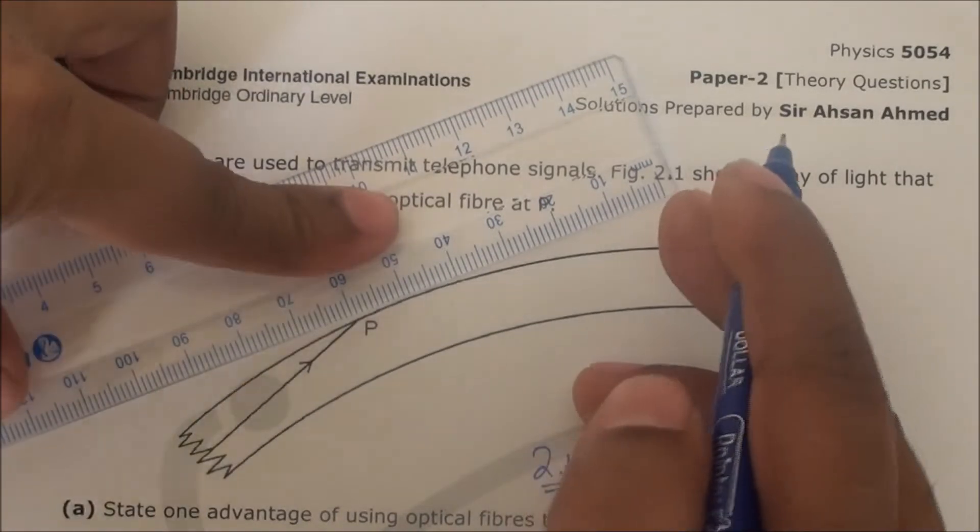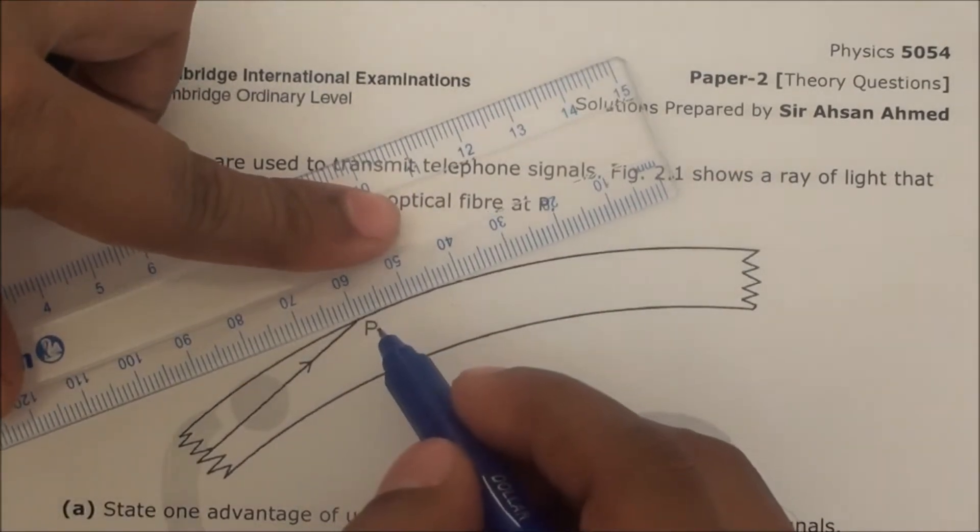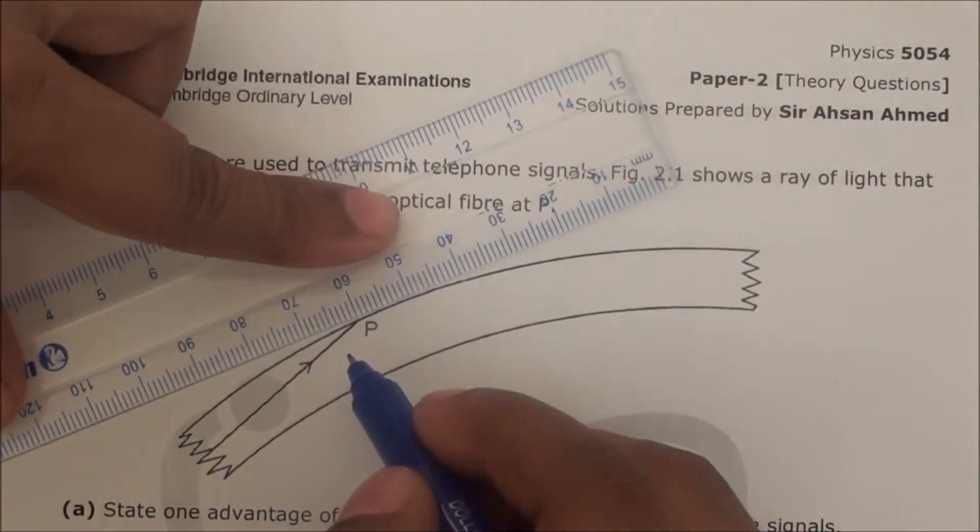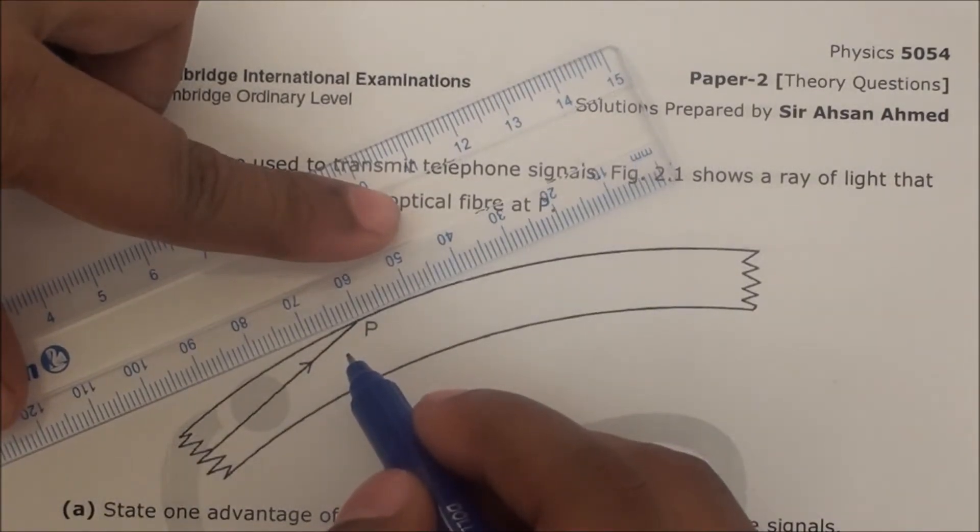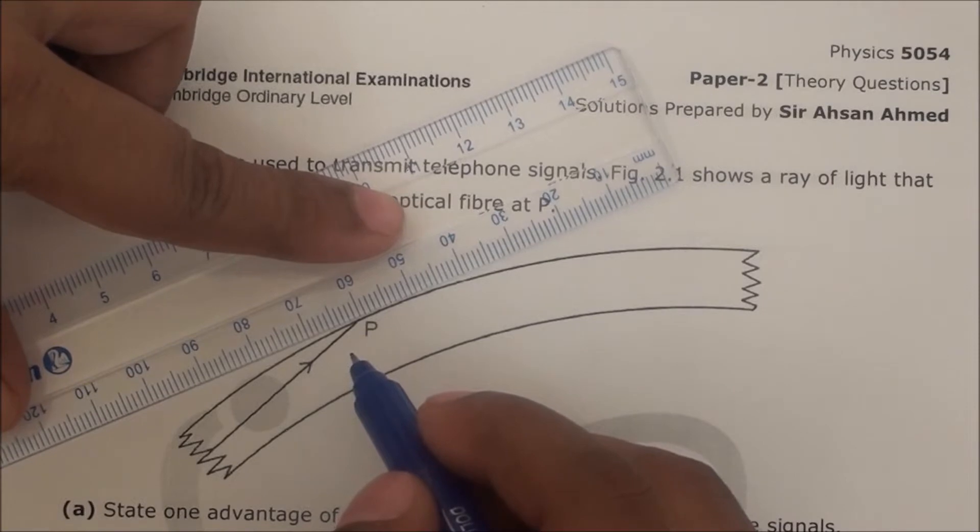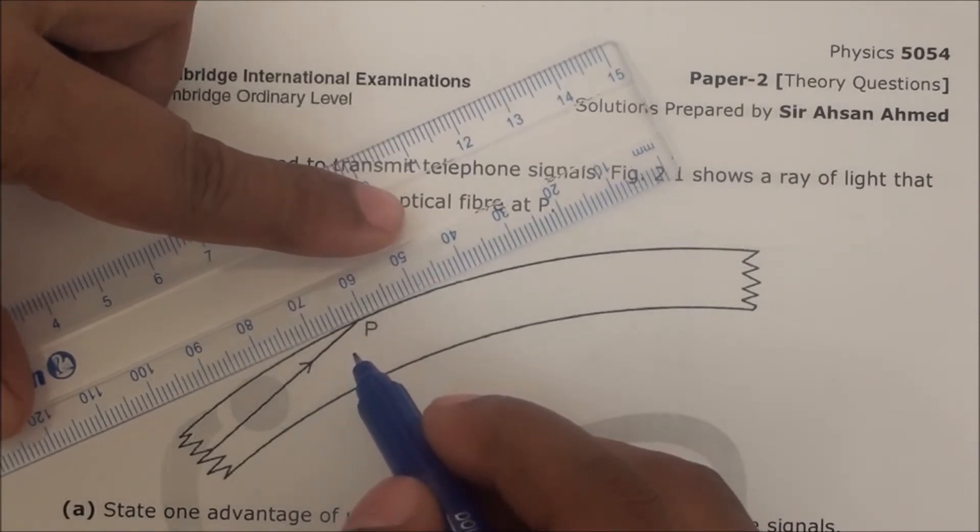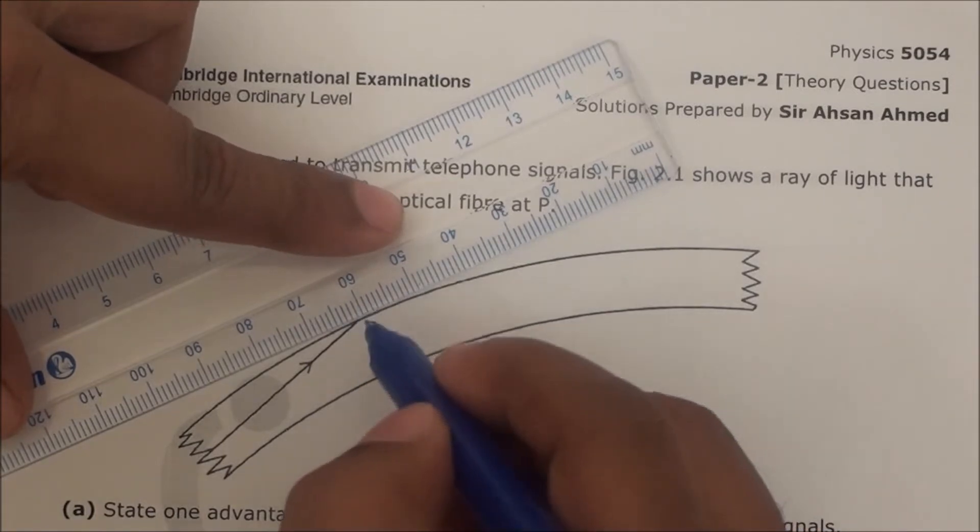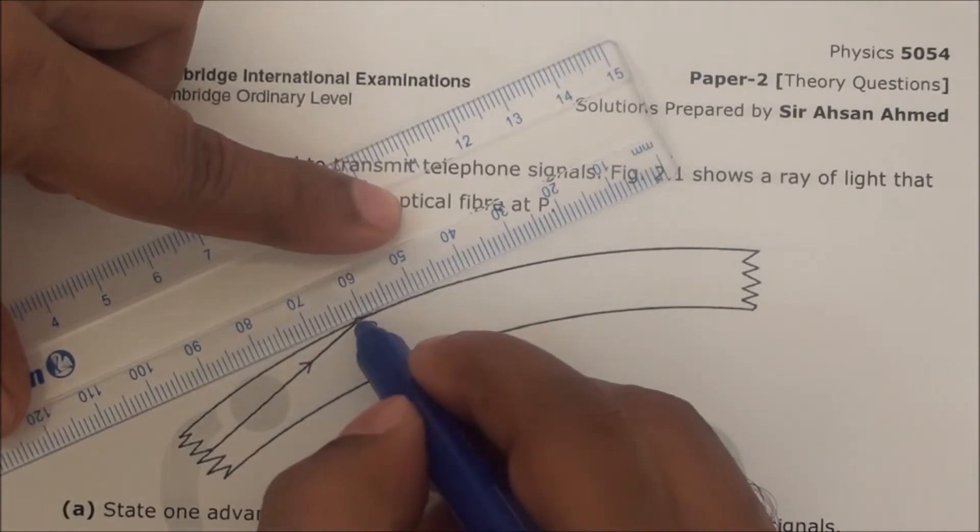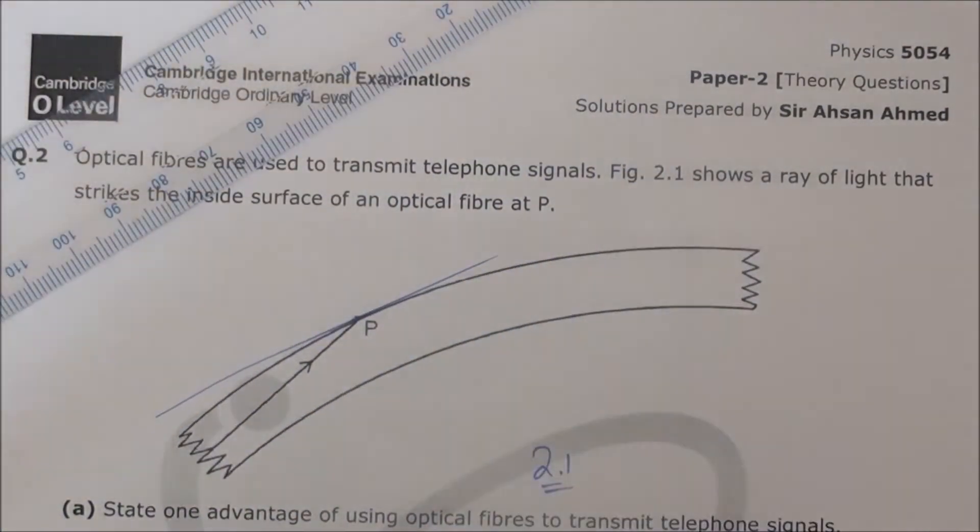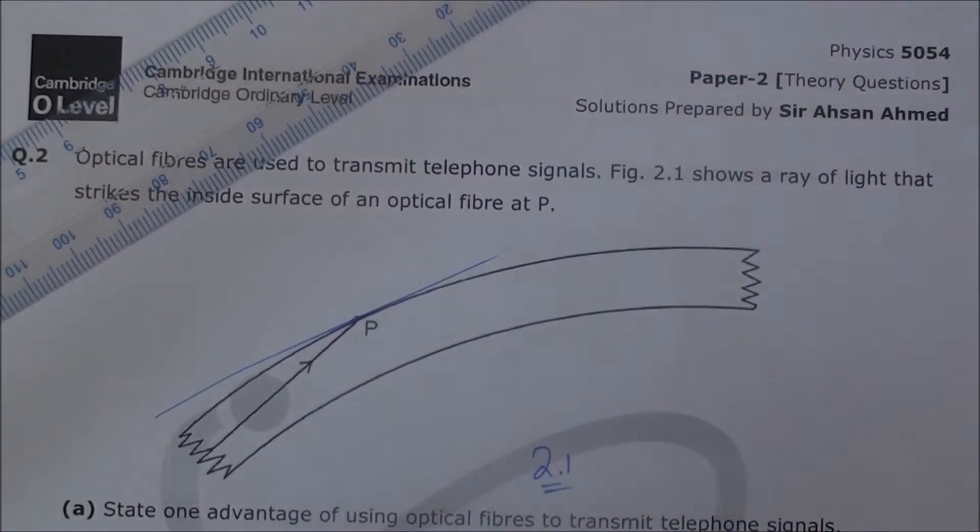I'm going to draw that line which touches only this point P. It will be difficult to be exactly like that, so you have to be very careful while drawing it. Alright, that might work. So this is the line we have drawn which is touching at P.